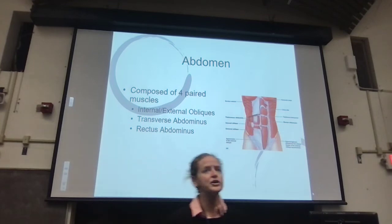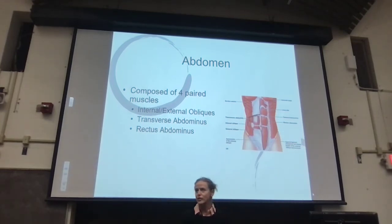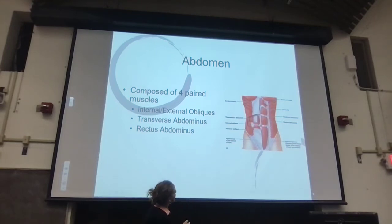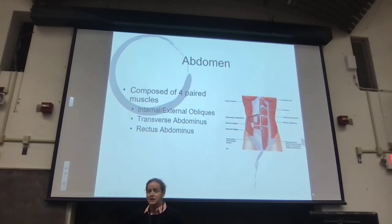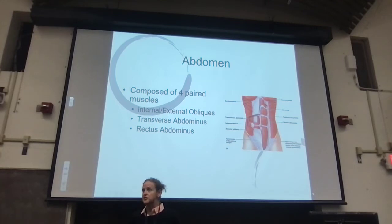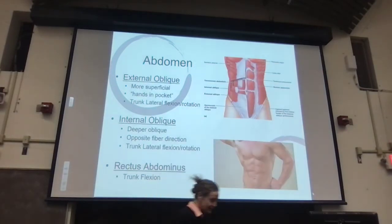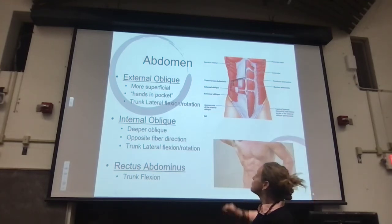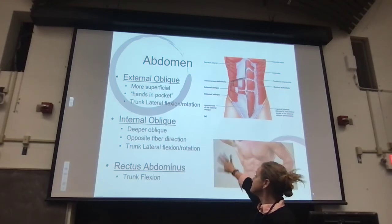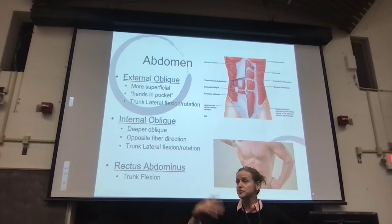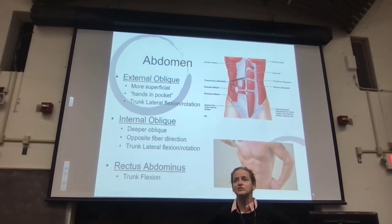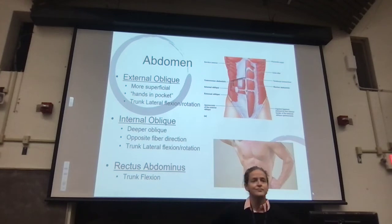Starting with the abdomen — we already know where these muscles are. Rectus abdominis is in the middle; linea alba is the white connective tissue in the middle. External oblique is the outermost layer — hands in my pocket. Internal oblique is the next layer, with opposite direction of fibers to the external. Deepest is the transverse abdominis, with fibers running horizontal. For the obliques — both internal and external — the function I'm asking you to know is trunk rotation.